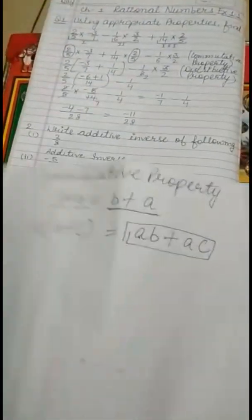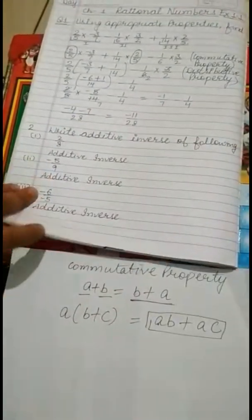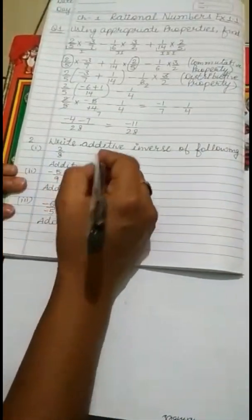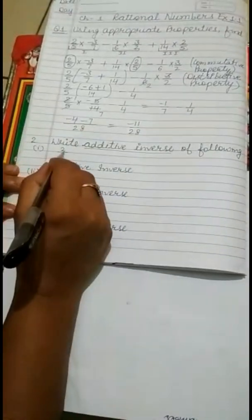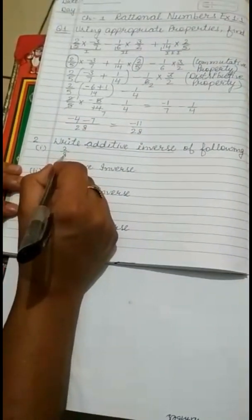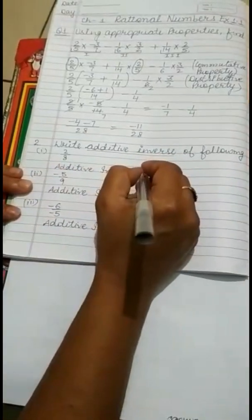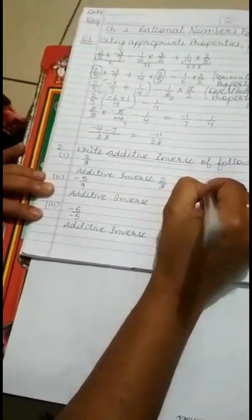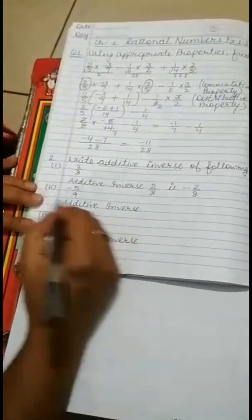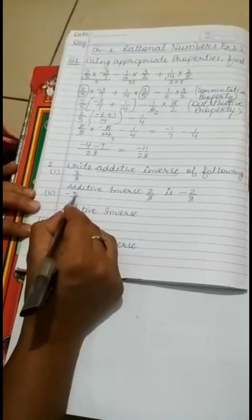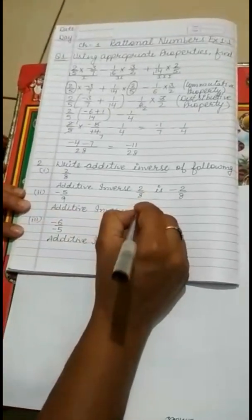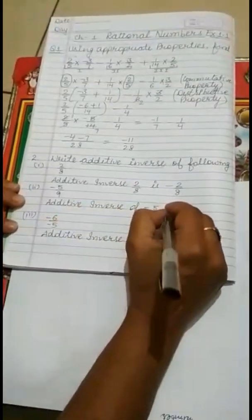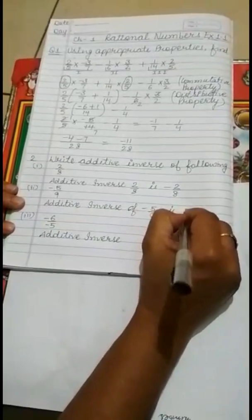Now question number 2. In question number 2, we will write down the additive inverse. As we discussed in the last lecture, additive inverse is the negative of a number. The additive inverse of 2 by 8 is minus 2 by 8. The additive inverse of minus 5 by 9 is plus 5 by 9.